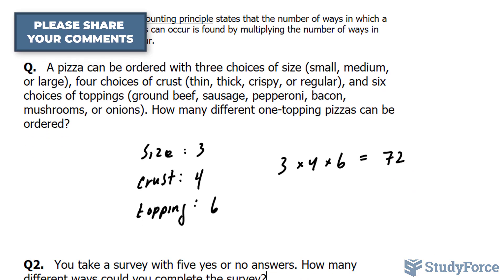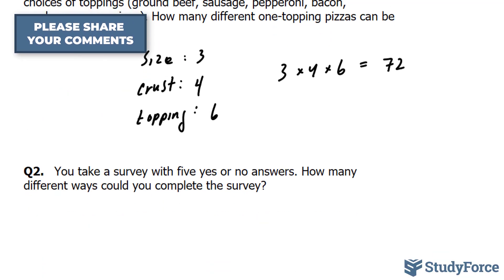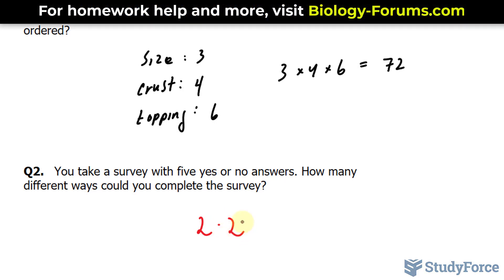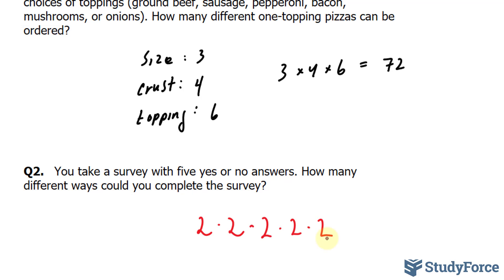Now, in question two, we're asked: you take a survey with five yes or no answers. How many different ways could you complete the survey? So we have five stages. We have question one, you have two options. In question two, we have two options. Question three, another two, four, and five, the same thing.